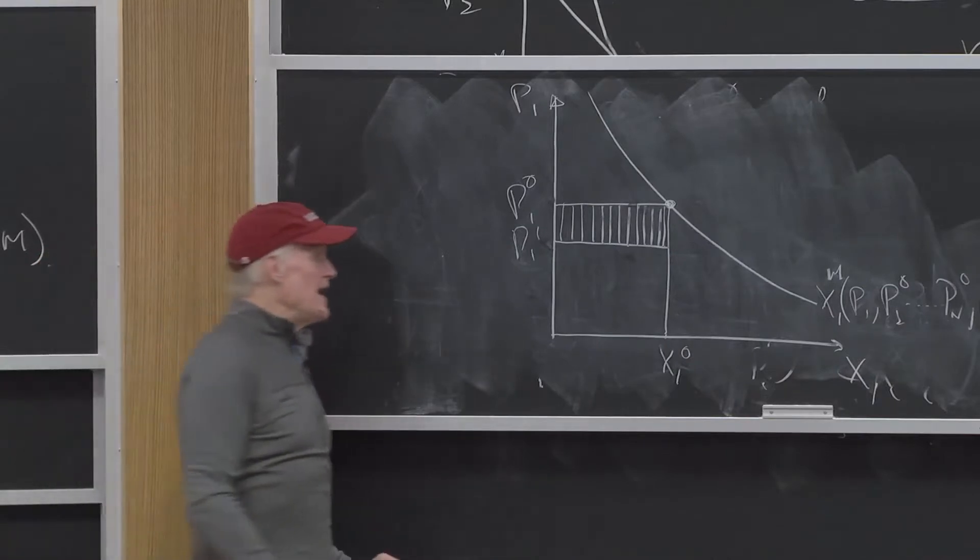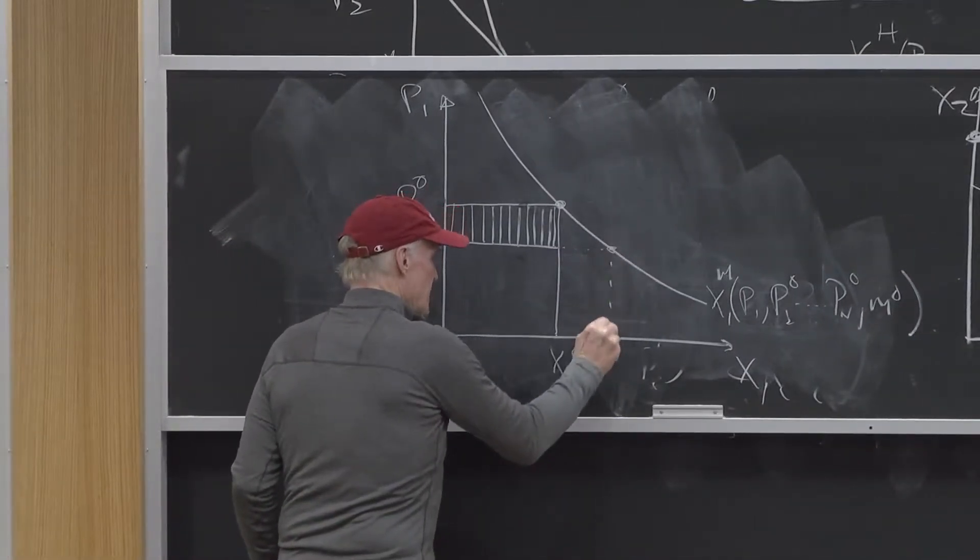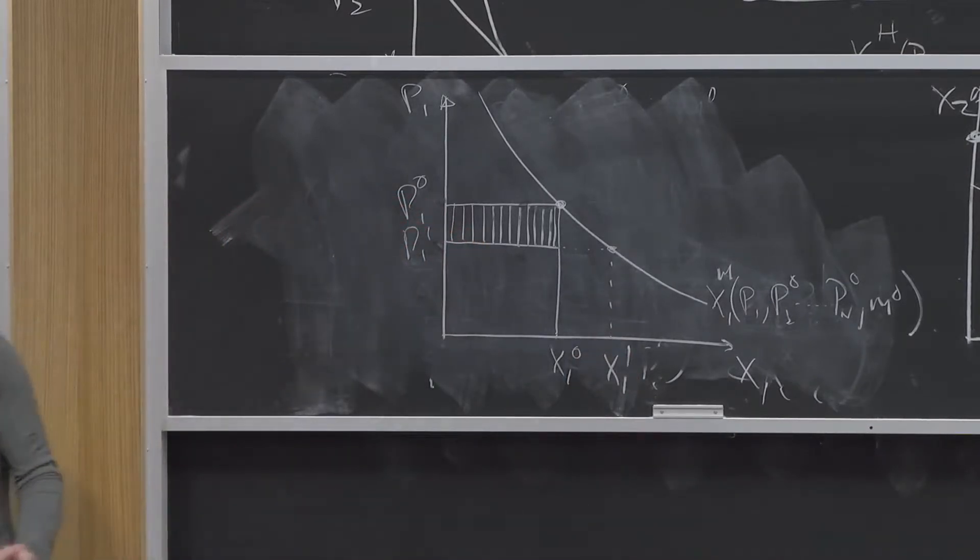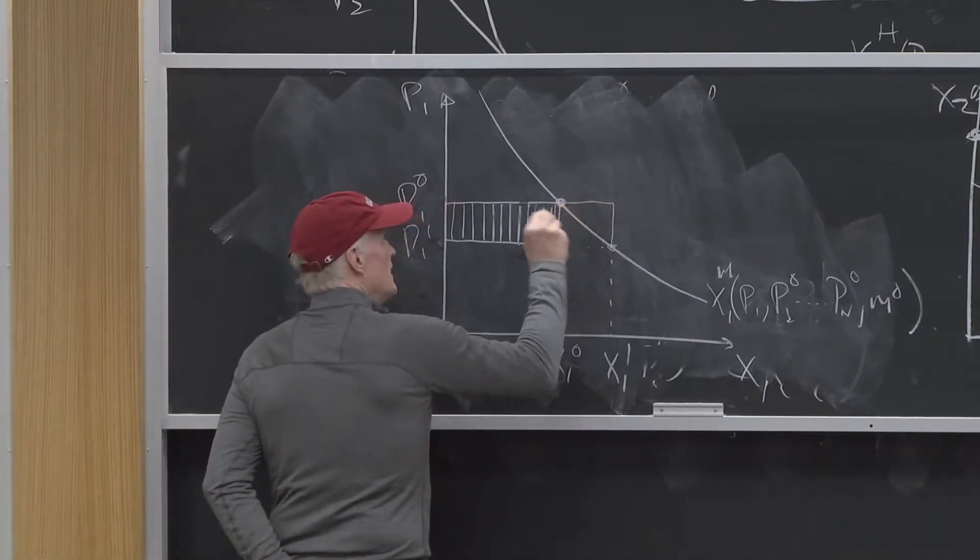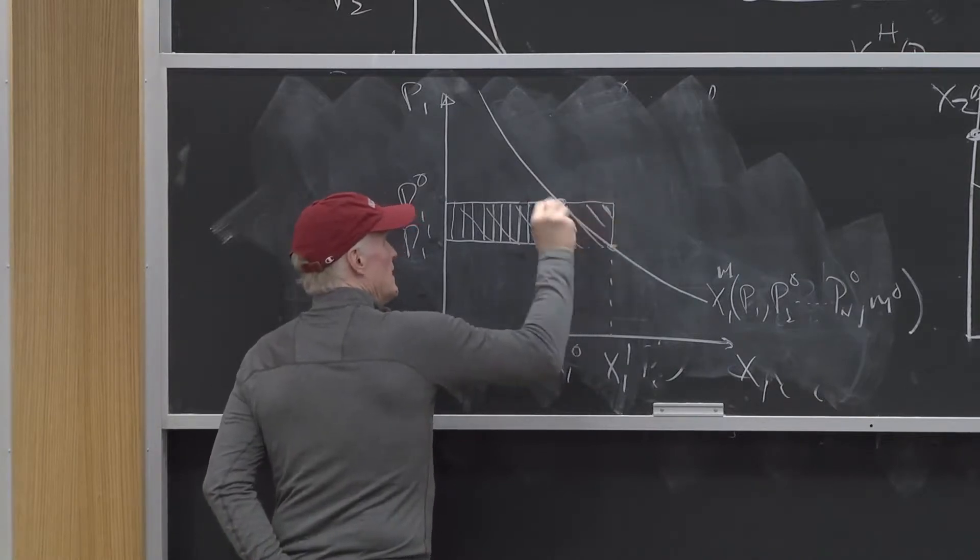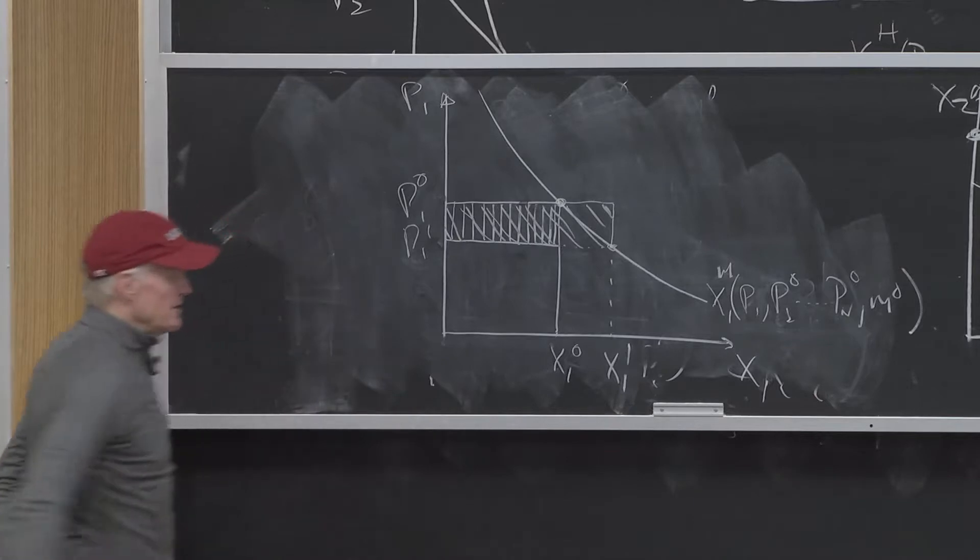What if I measured my gain not using my initial quantity, but I measured my gain using my new quantity, when the only thing changed was the price of good one? Well, then I would measure it by this big box.